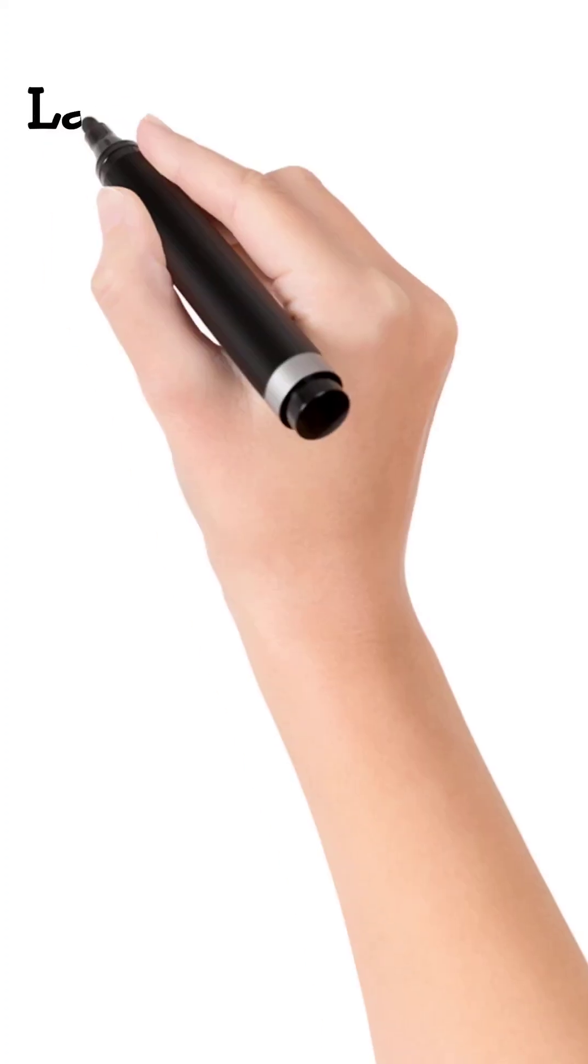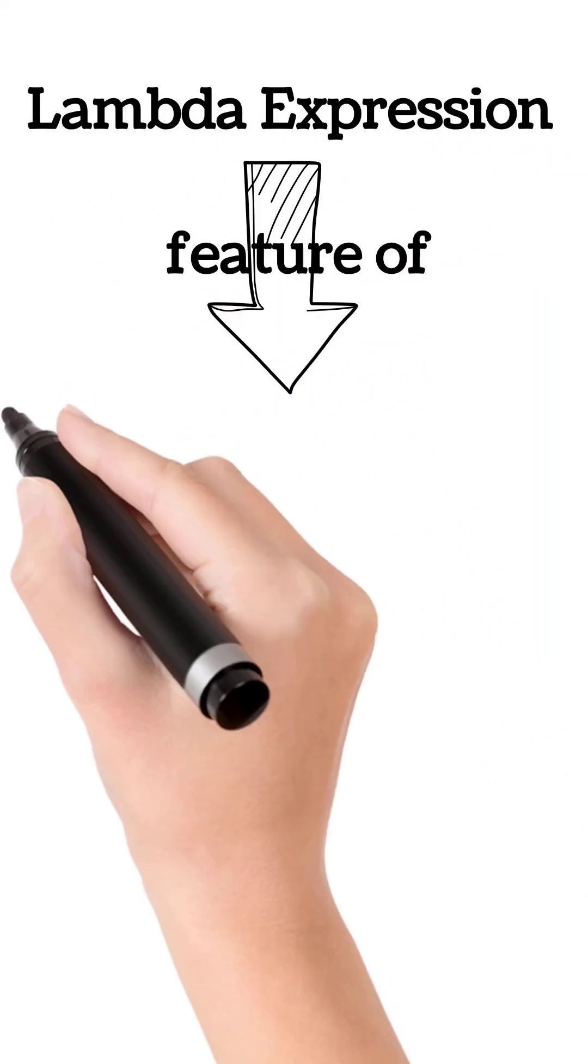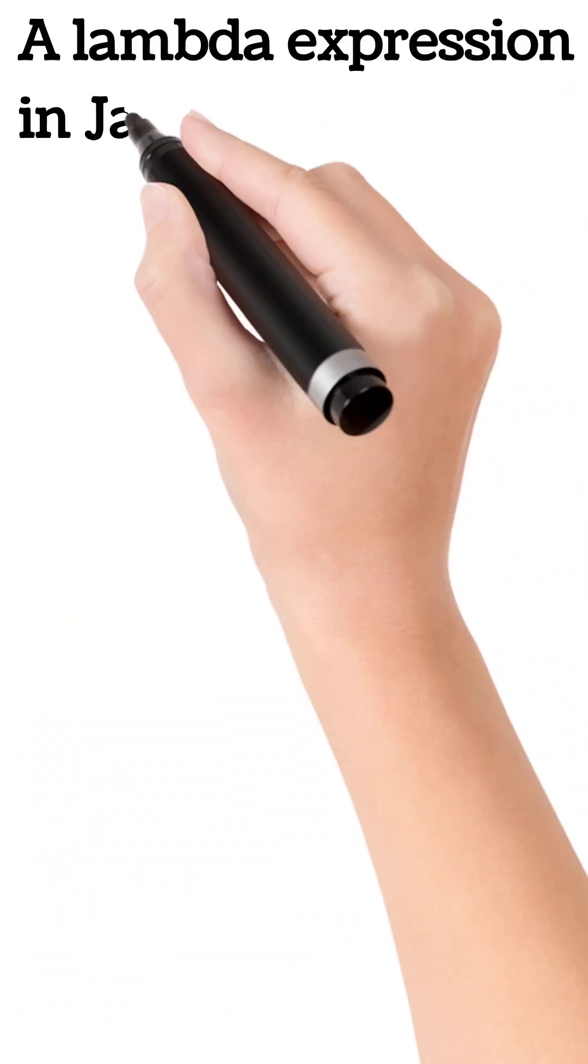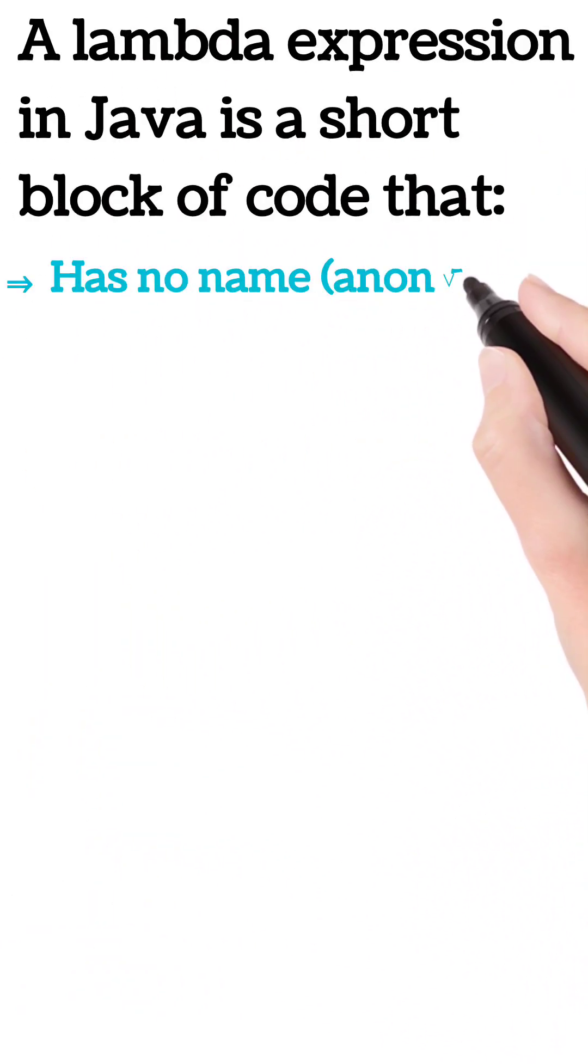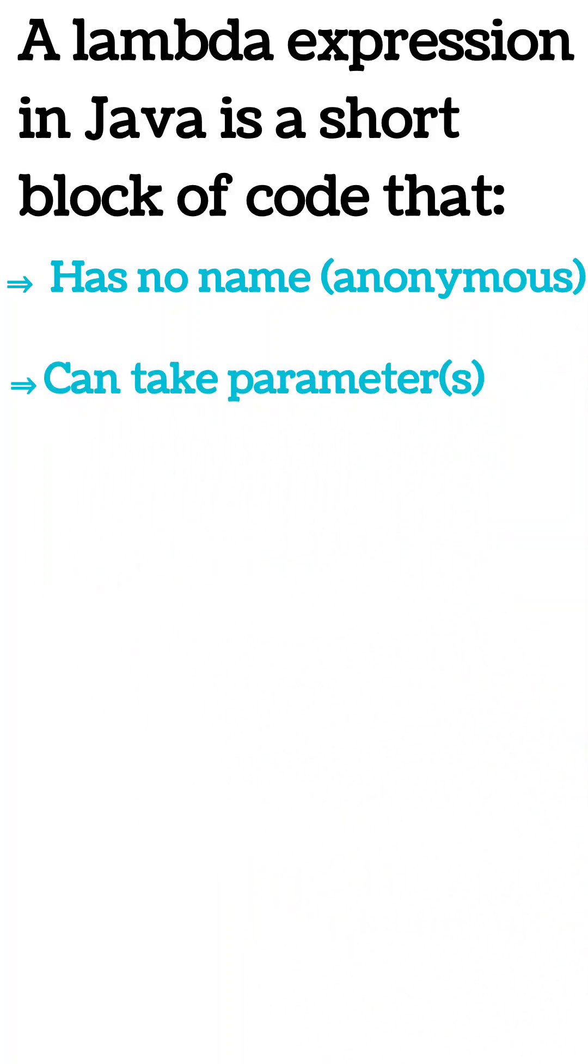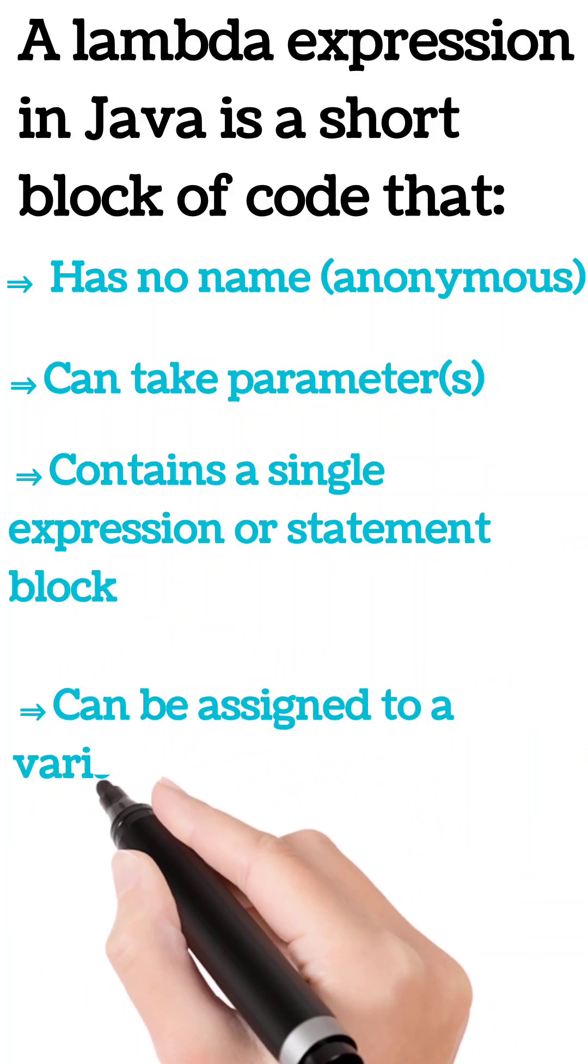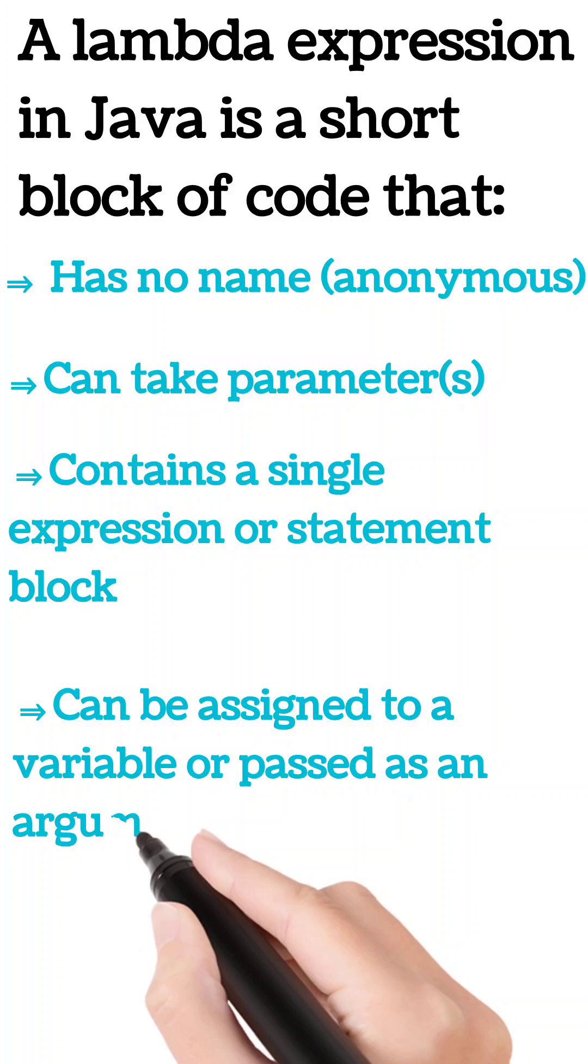What is a lambda expression in Java? A lambda expression is a feature of Java 8. It is a short block of code that has no name, meaning it is anonymous. It can take parameter or parameters, contain a single expression or statement block, can be assigned to a variable or passed as an argument, but it must follow a functional interface.